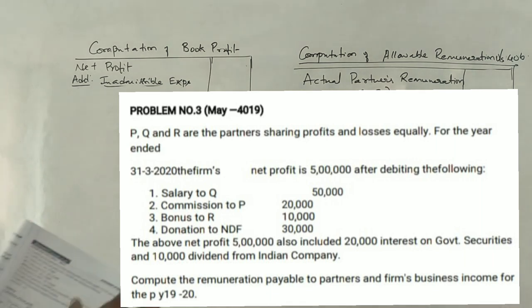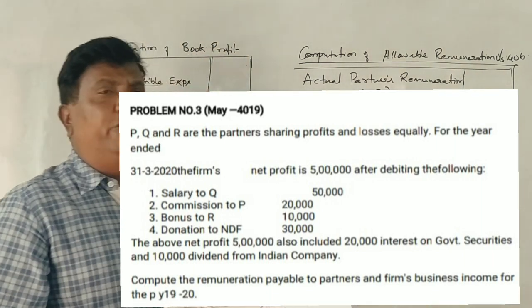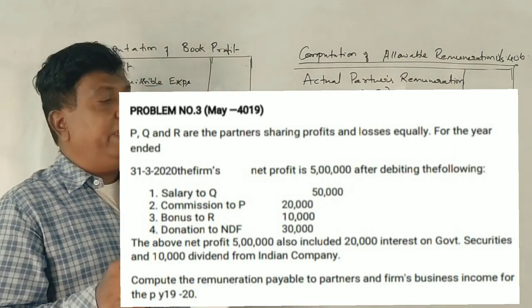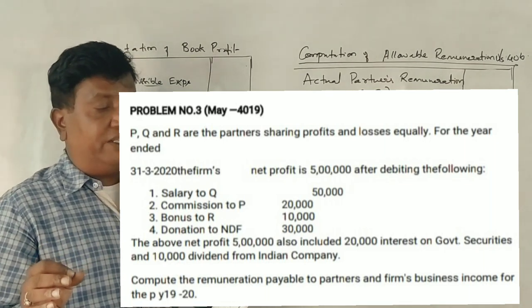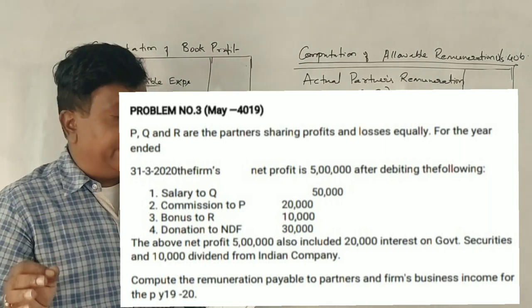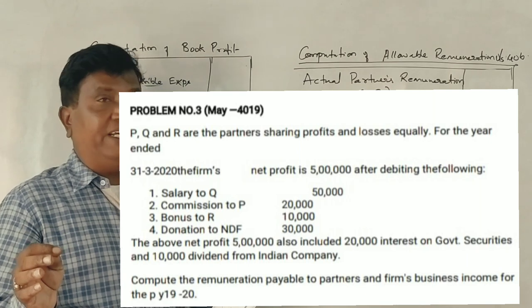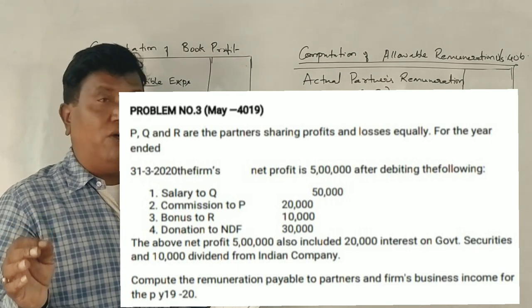Guys, 2019 question 1. PQR are partners in a firm sharing profits and losses equally for the year ended March 2020. The firm's net profit is 5 lakh after debiting the following.